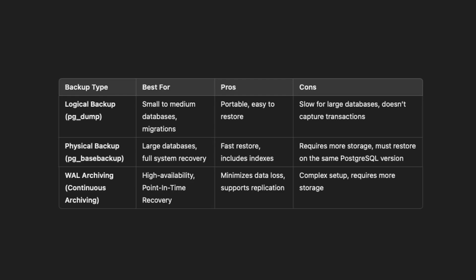Physical backup is good for replication — it can be used for setting up replica databases. Some disadvantages are that it's not necessarily very portable, and the backup may need to be restored on the same PostgreSQL version. The third option is continuous archiving with WAL. Continuous archiving allows PostgreSQL to store transaction logs (WAL logs), which record every database change, enabling point-in-time recovery.